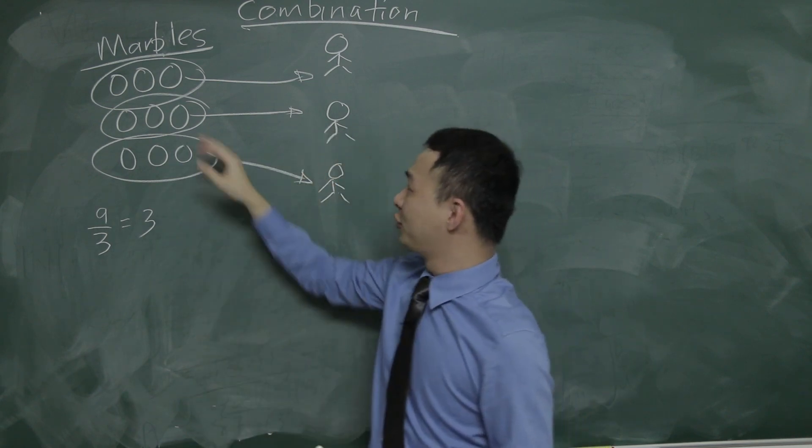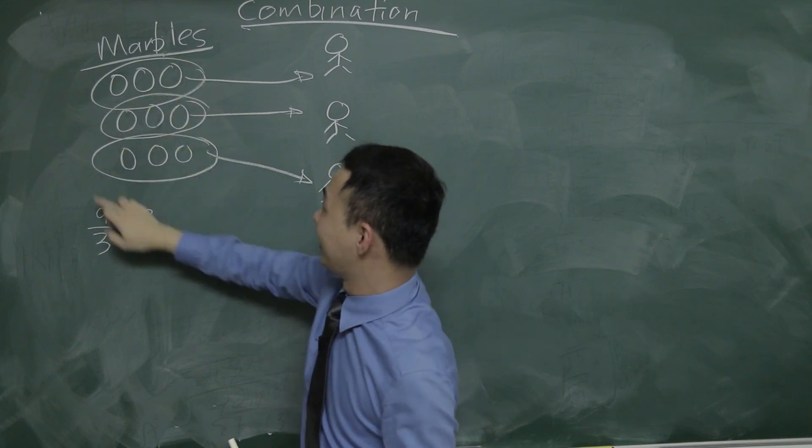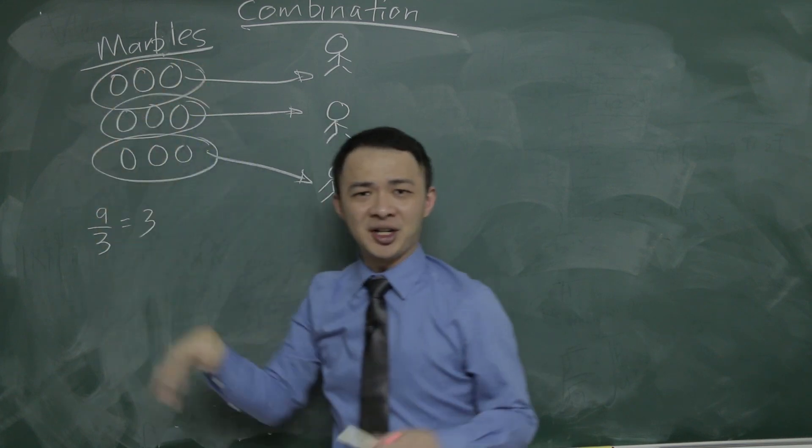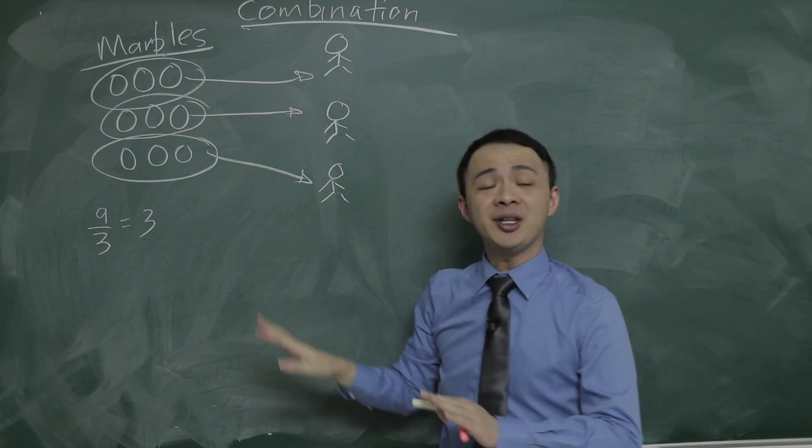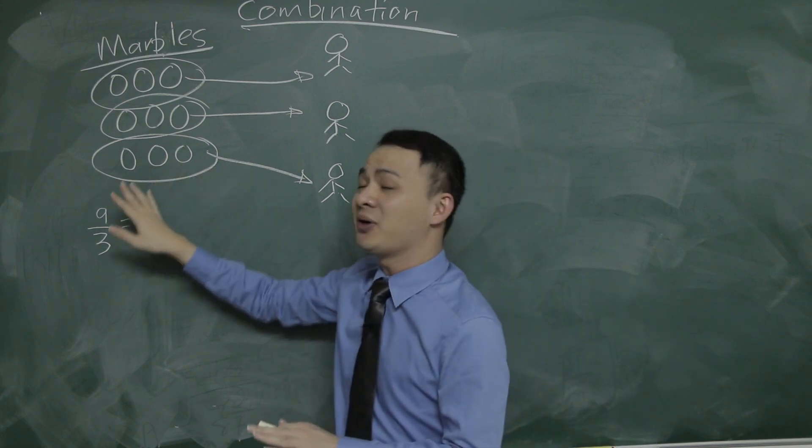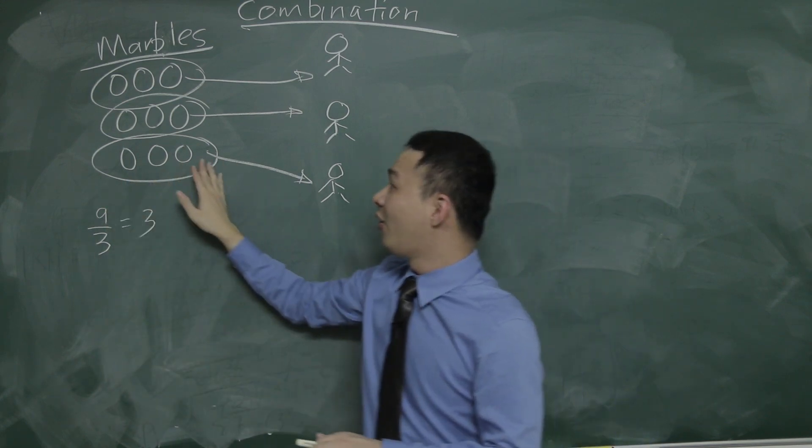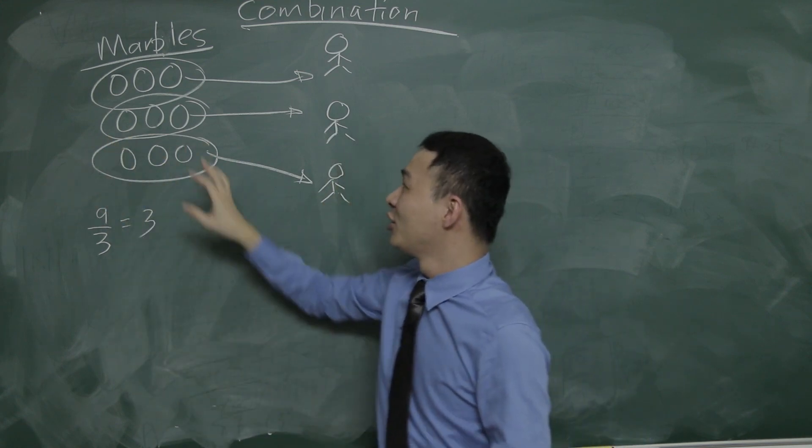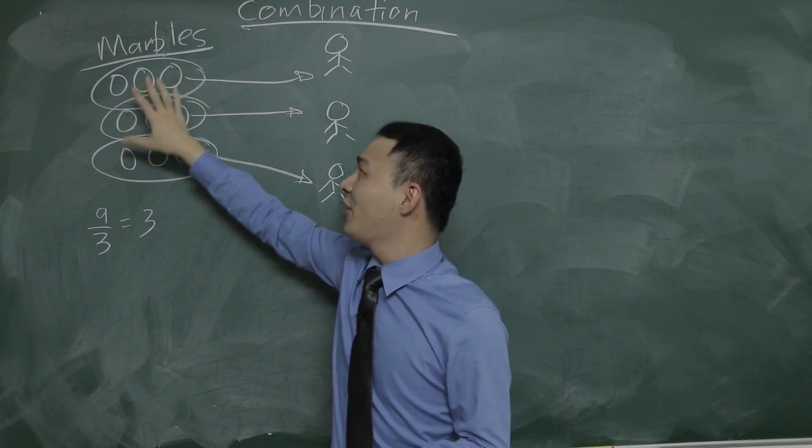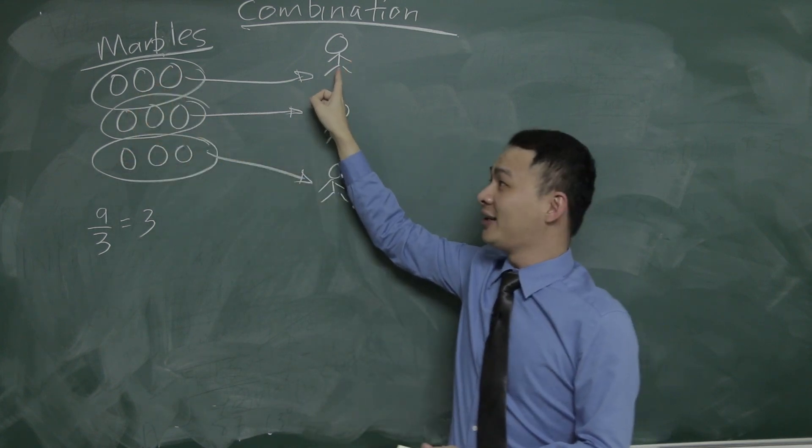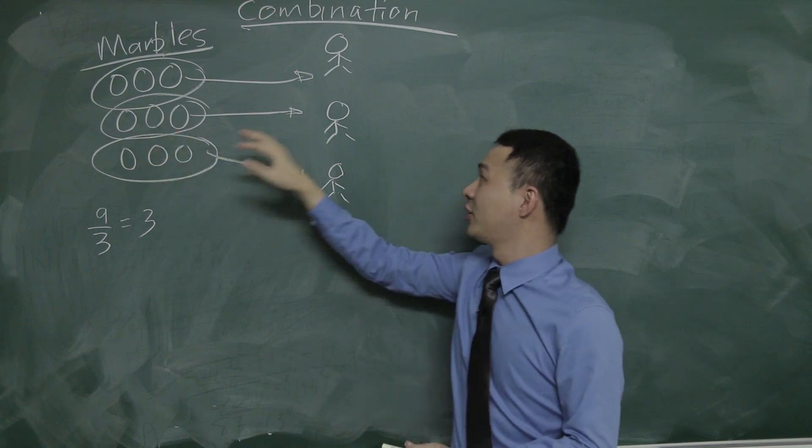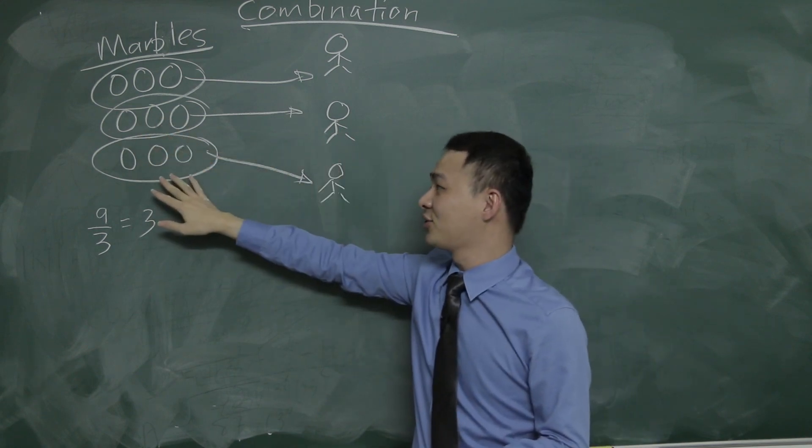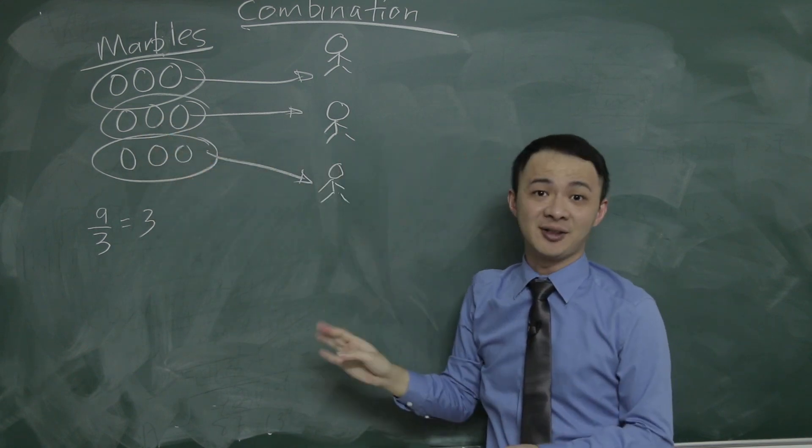And another three marbles here I can give to the last child. You might ask, what if you randomly pick three marbles like this, or like this, will you change the result? No, because it's the same, because over here we assume all the nine marbles are identical marbles. I mean all the nine marbles here are exactly the same. So we just randomly pick any of the three marbles here to give to the first child, and then another three marbles here to give to the second kid, and then the last three marbles to give to the last kid over here.